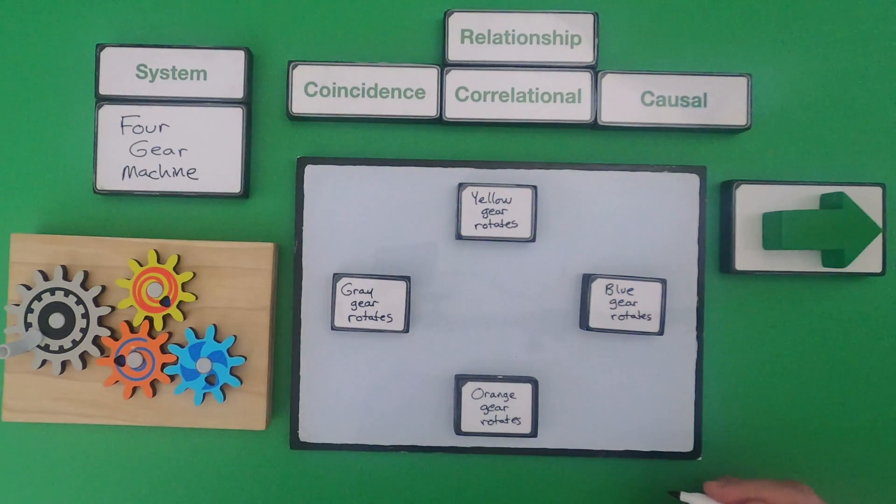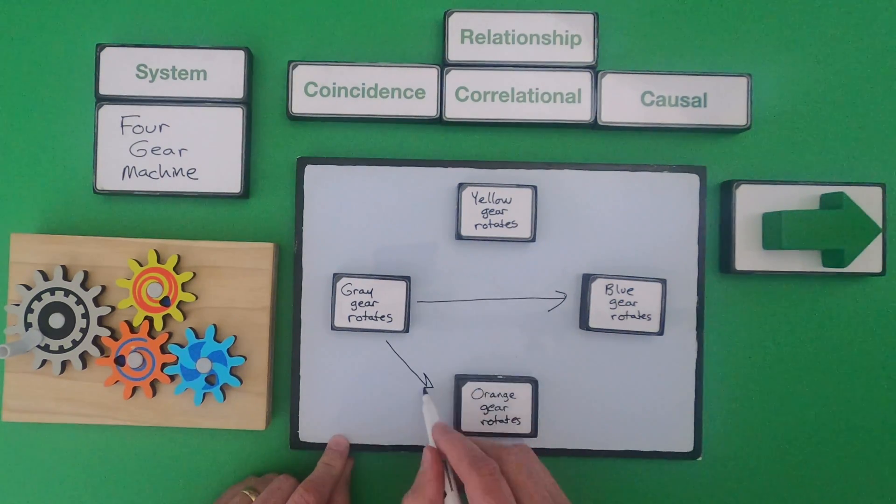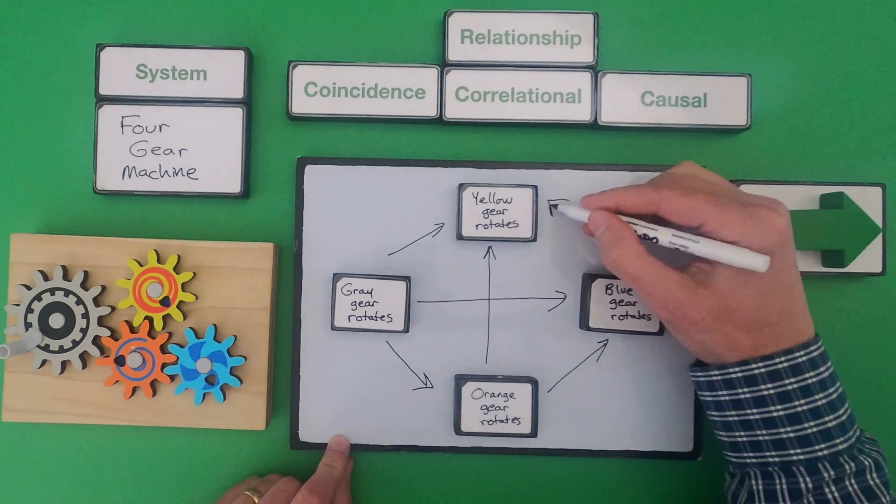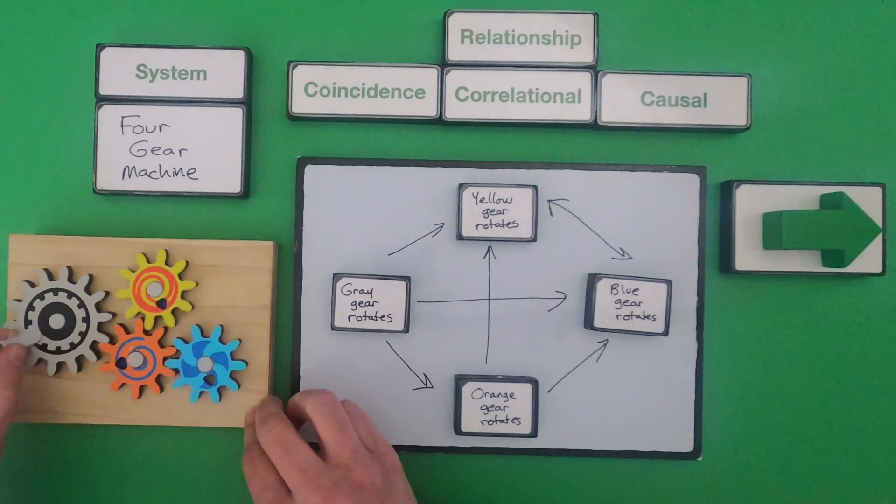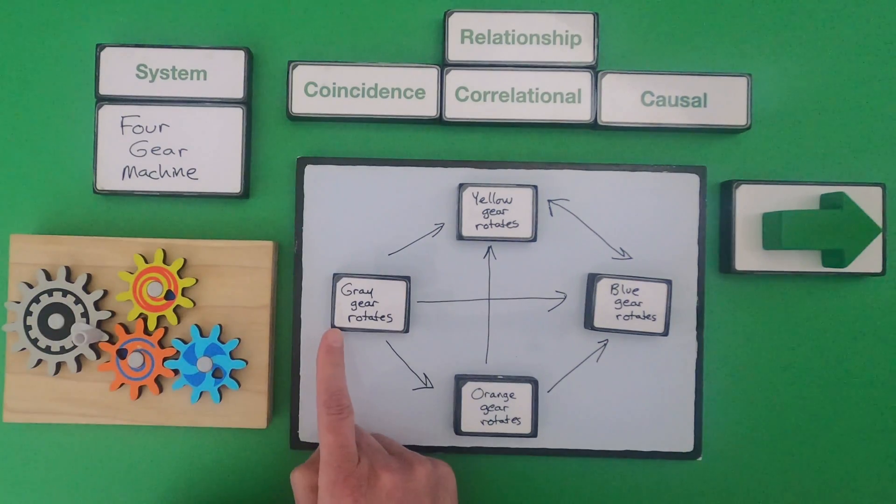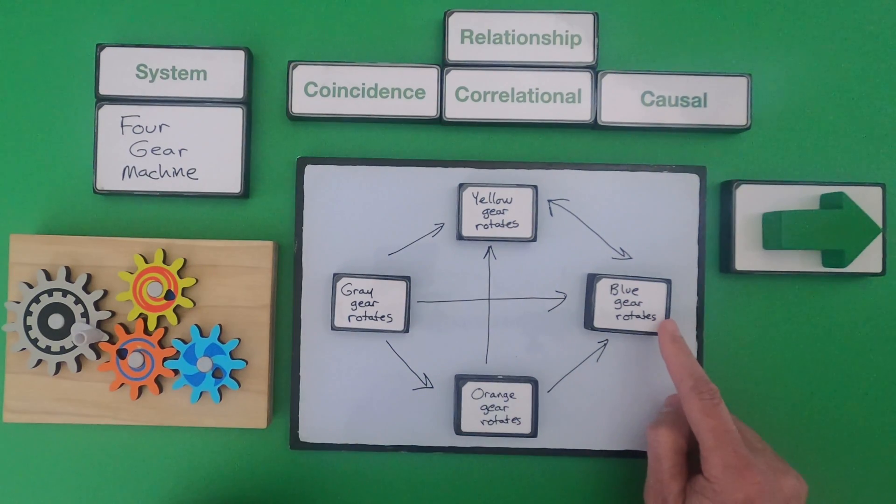So let me kind of put forward some arrows to show you what I'm thinking. So since nothing starts moving until I move the gray gear I think the gray gear rotating causes all the other gears to move. It causes the orange gear to rotate which causes the blue gear to rotate.